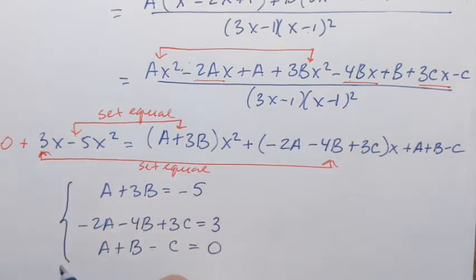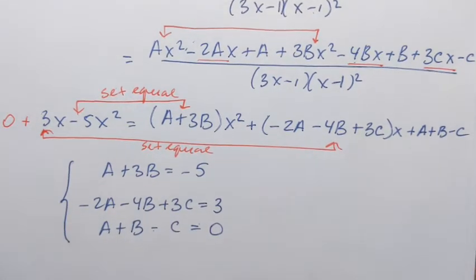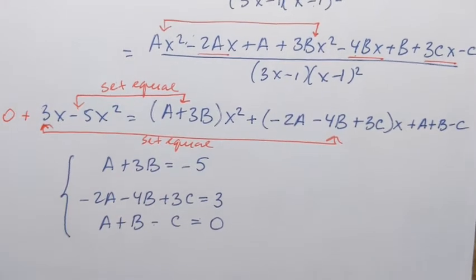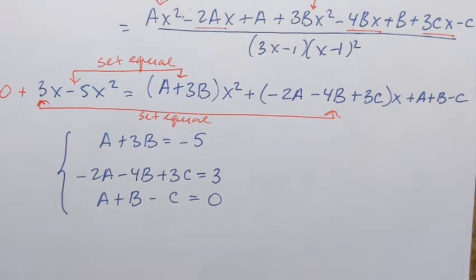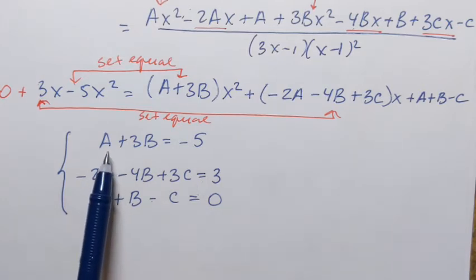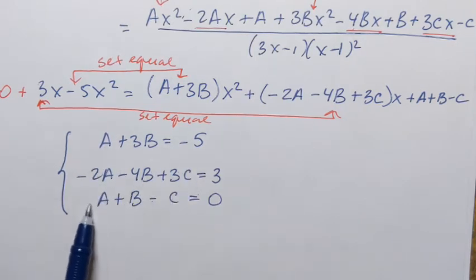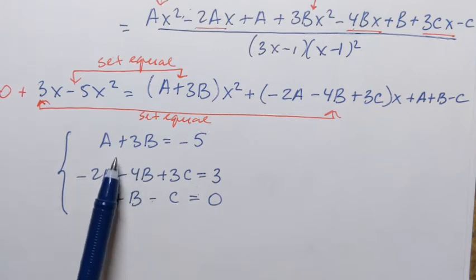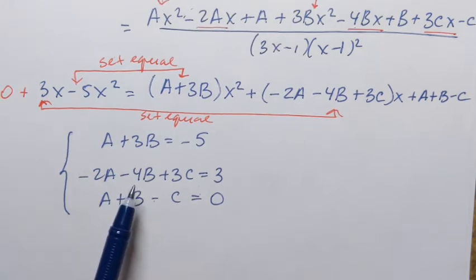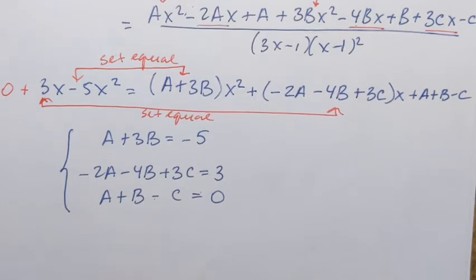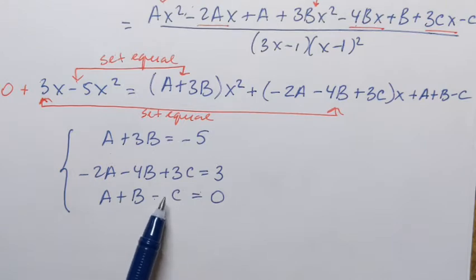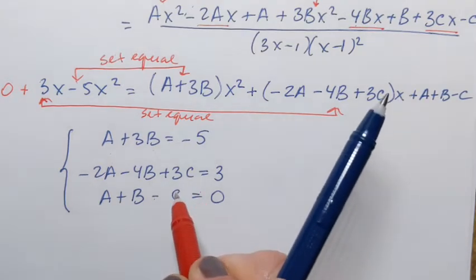To solve a system of three equations with three unknowns, we first reduce it to two equations with two unknowns. The first equation already has only a and b. So I'll use the second and third equations to eliminate c, getting a second equation in only a and b — using the elimination method.